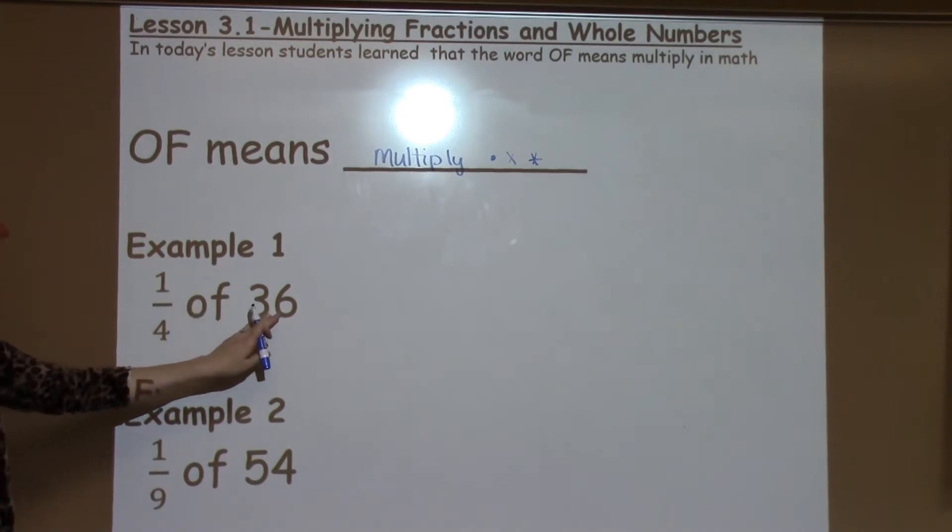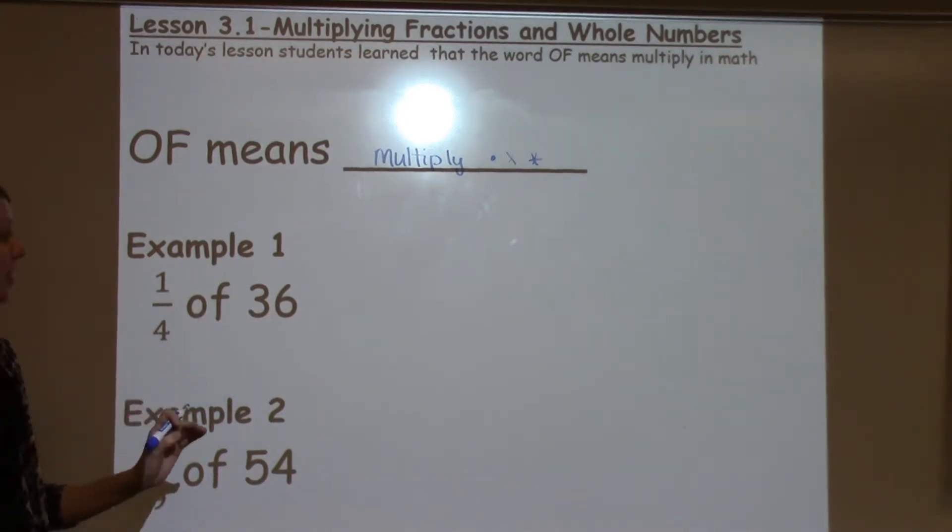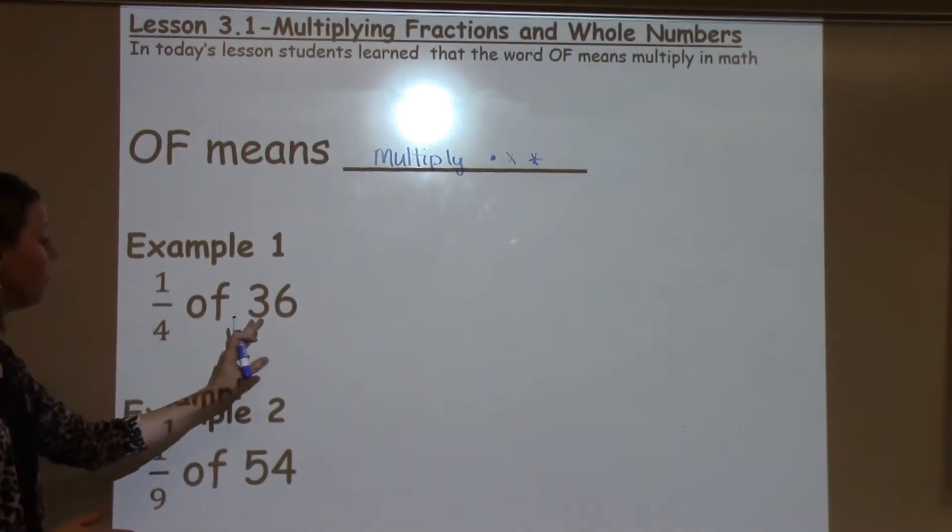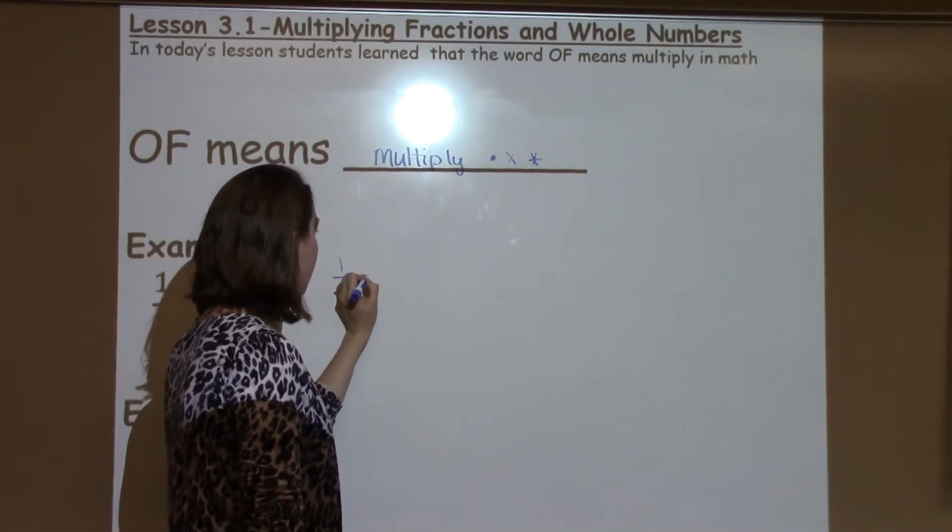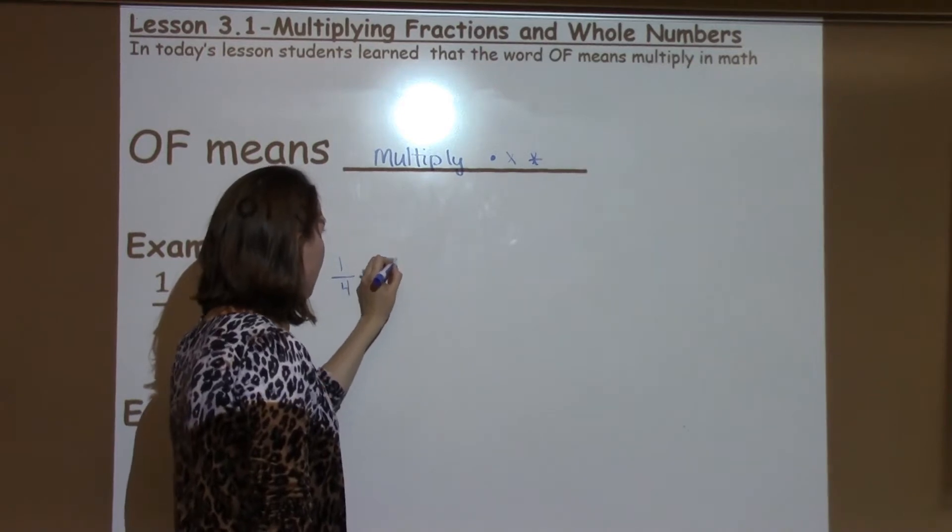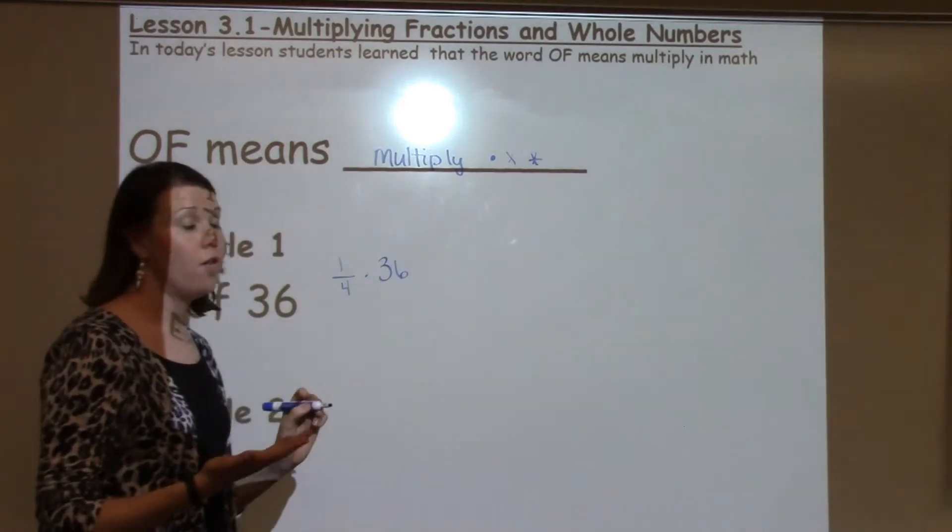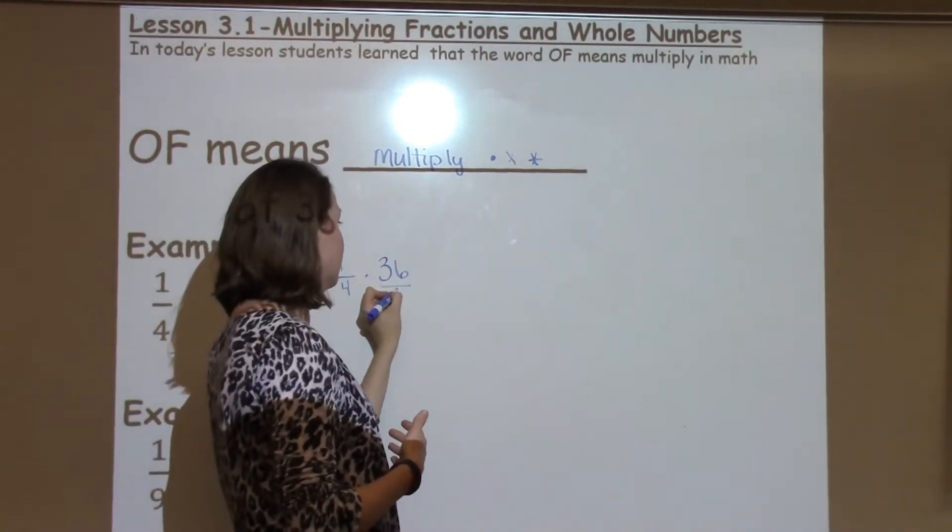To multiply this, we can do it a couple of different ways. One way is to rewrite the problem as 1 fourth times 36. Now, to make 36 a fraction, I'm just going to put it over 1, because 36 over 1 is the same as 36.